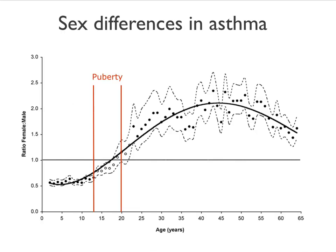There are differences between males and females in the development of asthma: females have more non-allergic asthma. The risk of developing asthma during your life depends on whether you're male or female. On the y-axis is the ratio female to male, and on the x-axis is age. If this ratio is one, women and men have the same risk. Boys have an increased risk in childhood, this changes during puberty, and then throughout the reproductive life of women, women have an increased risk. After menopause, the risk seems to go down again.